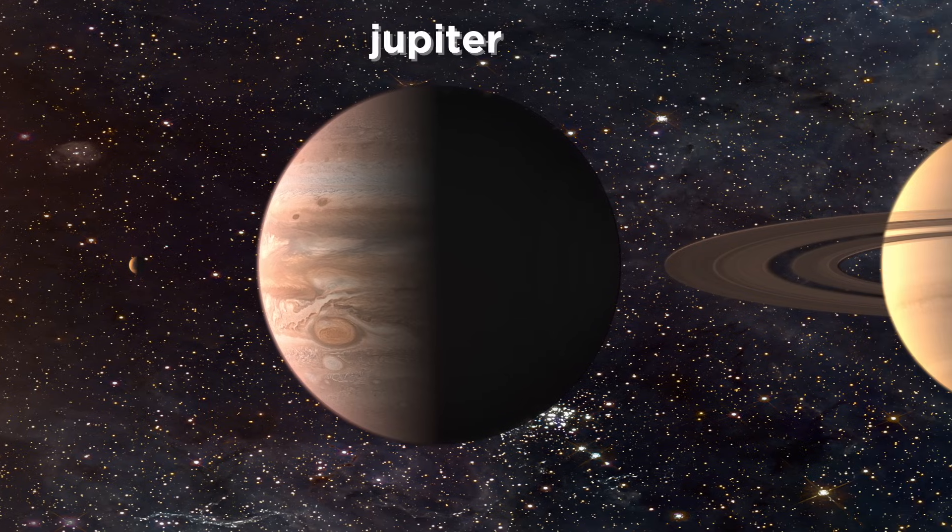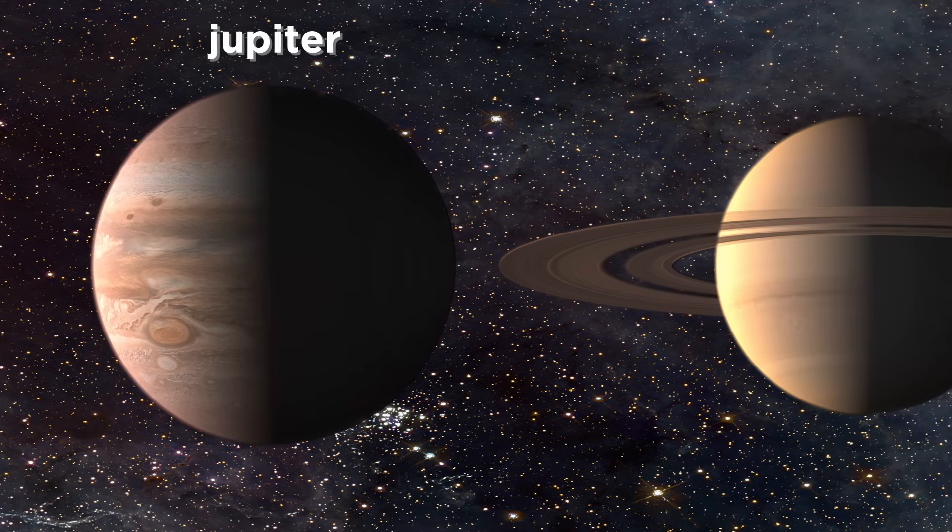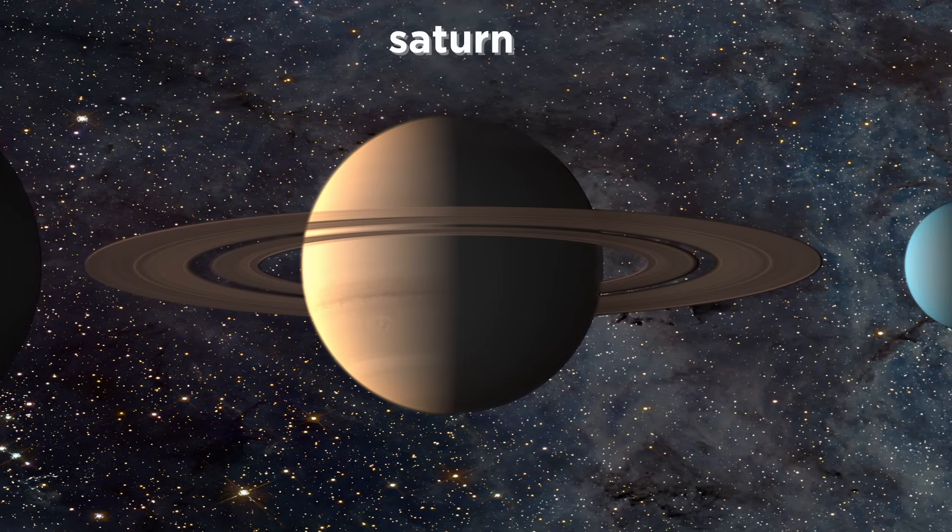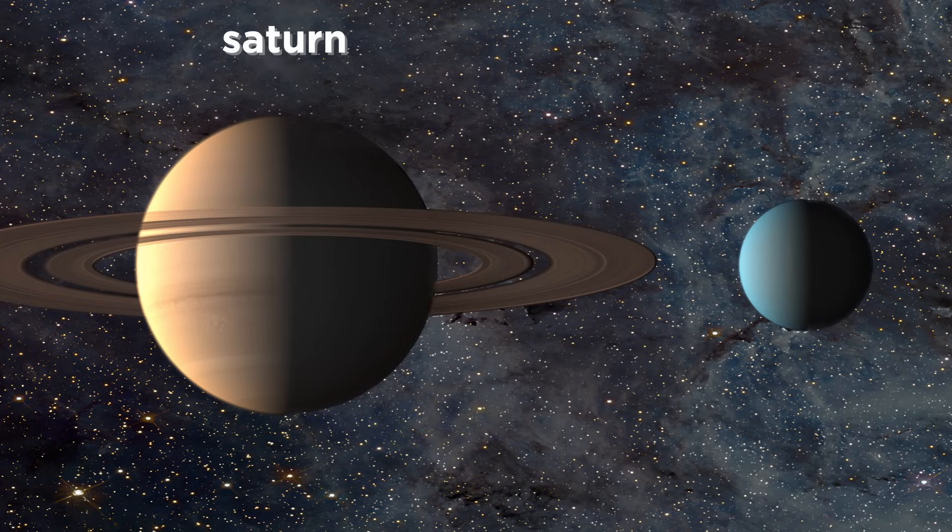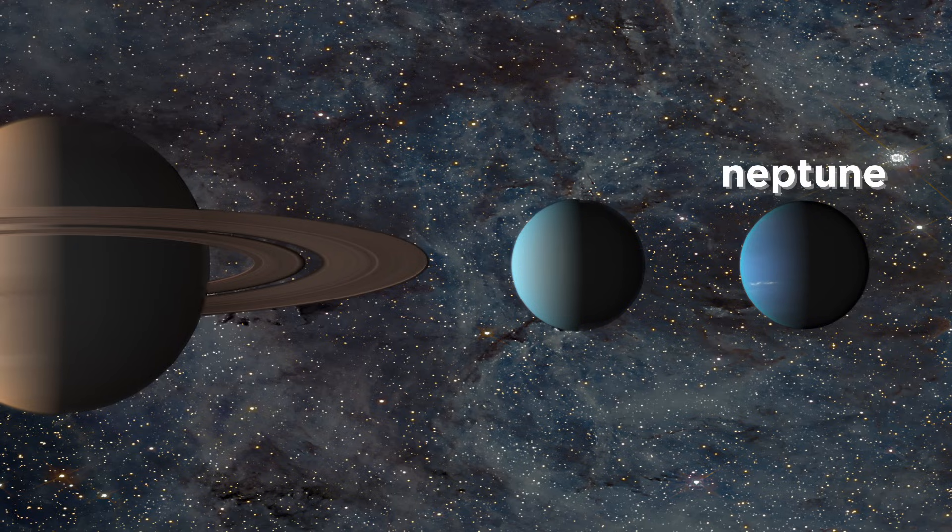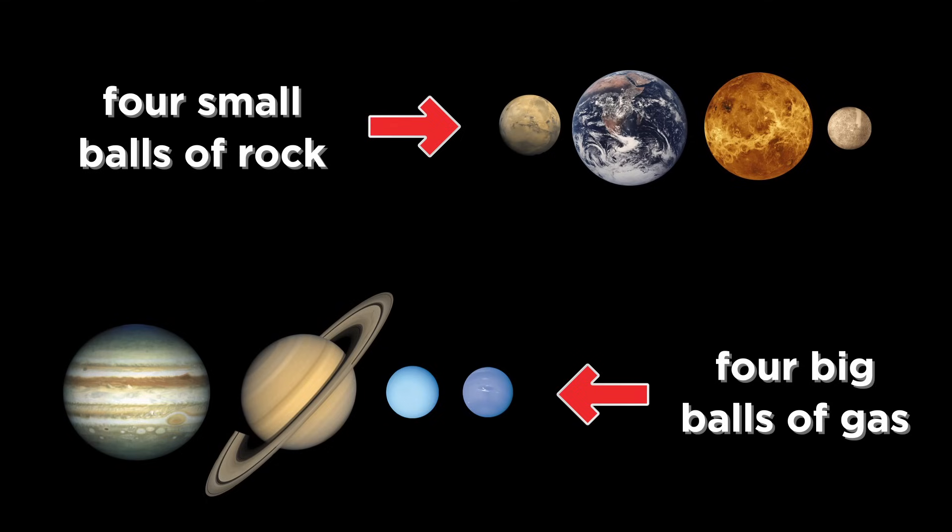The first of the gas giants is Jupiter, the largest of the planets. After that comes Saturn with its breathtaking system of rings. Then comes the icy planet Uranus. And lastly, the outermost planet Neptune. Four small balls of rock and four big balls of gas.